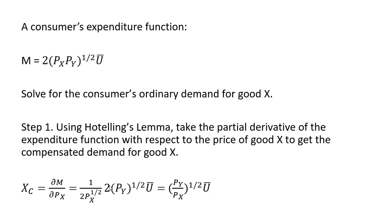Simplifying a little bit: the 2 here and the 2 here cancel, and then I'm just going to gather the price of good y divided by the price of good x, with both of those terms raised to the 1/2 power. So here's the compensated demand for good x, holding utility constant at ū.